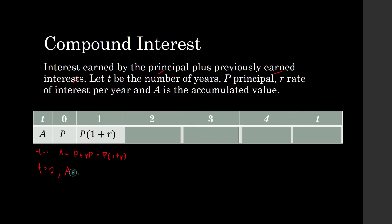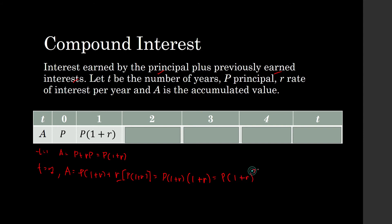the accumulated value is equal to the accumulated value from the previous year plus interest, and the interest is going to be r times the accumulated value from the previous year. Factoring out, the common factor is p times one plus r, leaving one plus r. So at the end of the second year, the accumulated value is equal to p times (one plus r) raised to the power of two.